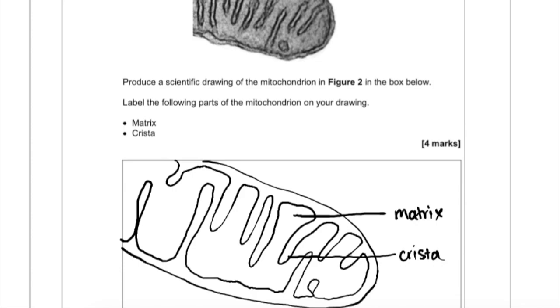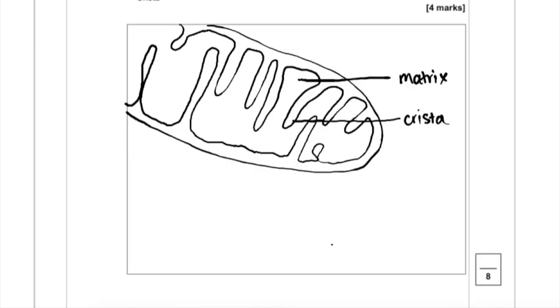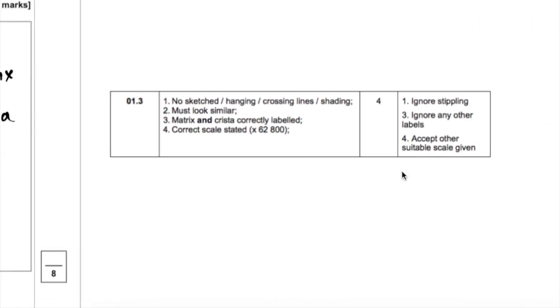And then finally, there's one more thing that a lot of students miss out. And that's drawing a scale. So we don't want any shading, no crossing lines, no sketching. Must look similar. Must correctly label it. And stating the scale.